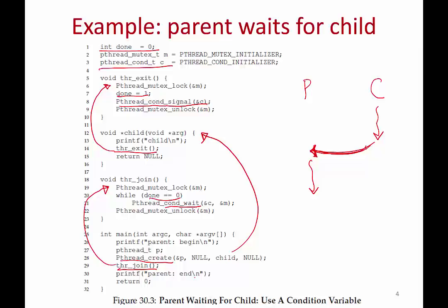When you run this code, the child printf statement goes first — the child prints, and then the parent prints its output at the end. This happens no matter which way the OS scheduler schedules the threads. If the parent thread runs first, it's going to wait. If the child thread runs first, then the parent thread will check the condition, realize the child has already run, and simply go ahead and execute without waiting. So the ordering of child first, parent next is guaranteed no matter what the scheduler does.